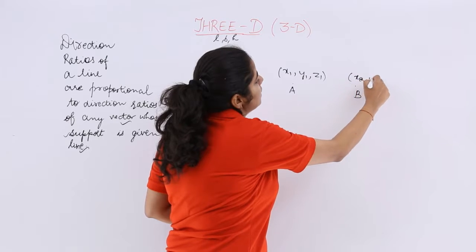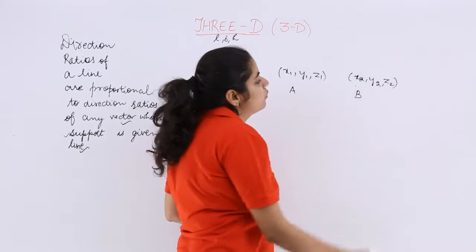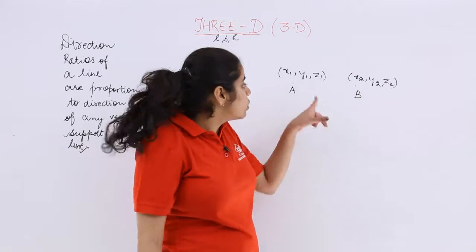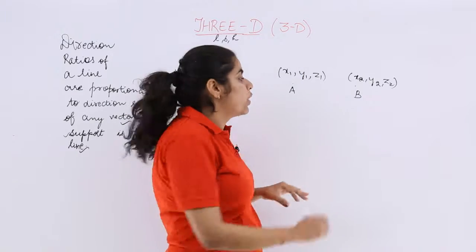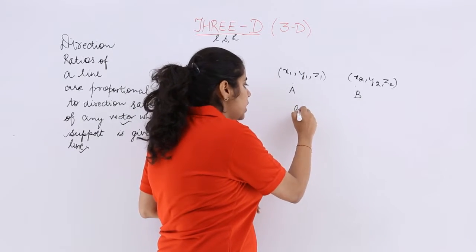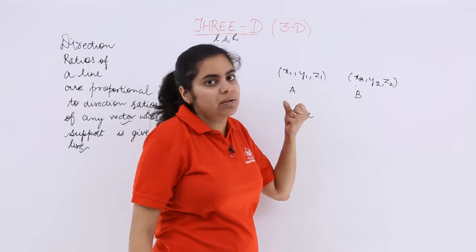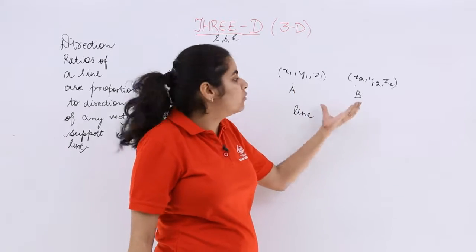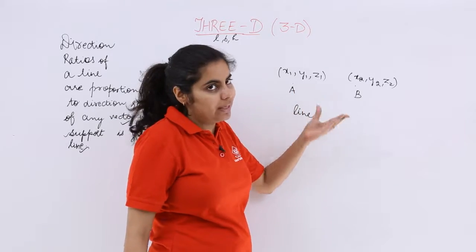Point B has the coordinate x2, y2, z2 because now we are talking about 3D. So the direction ratio of the line on which A and B lie would be computed from these coordinates of A and B.